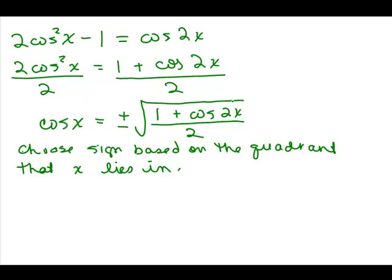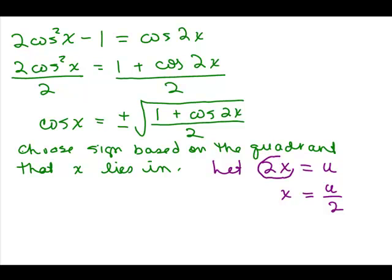Notice here I have the cosine of 2X, and over here on the right I have just the cosine of X. So this X is half of this 2X. To see it as a half angle identity, which is how most people like to see it, we do a little substitution. We're going to let 2X equal U. Then X would equal U over 2, dividing both sides by 2. So where I see a 2X I'm going to write U, and where I see an X I'm going to write U over 2.